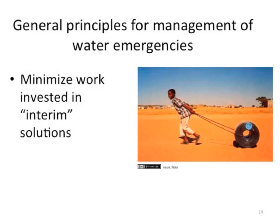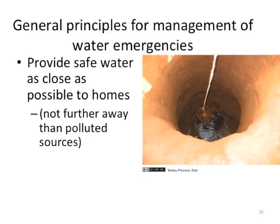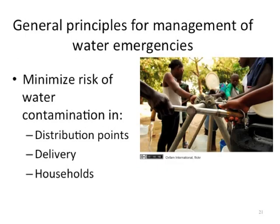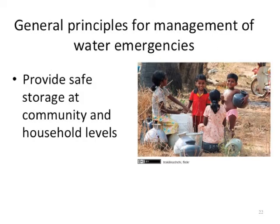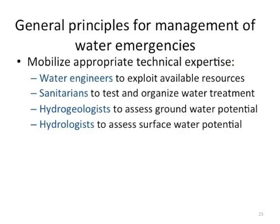Minimize work invested in interim solutions and try to look for permanent solutions. Provide safe water as close as possible to homes, and minimize the risk of water contamination at distribution points, during delivery, and in households. Provide safe storage at community and household levels. Mobilize appropriate technical expertise: water engineers to exploit available resources, sanitarians to test and organize water treatment, hydrogeologists to assess groundwater potential, and hydrologists to assess surface water potential.